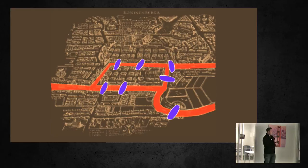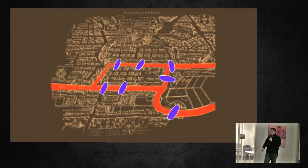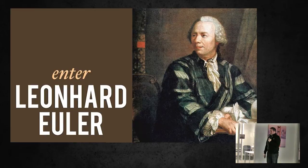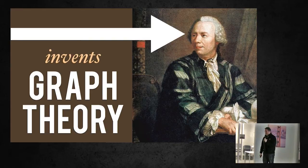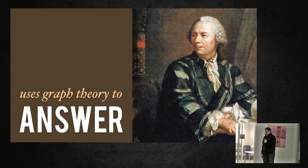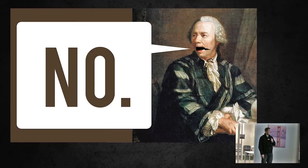The idea is, if you started on this landmass and you cross that bridge, can you cross that bridge and then cross that bridge and so on? Now you're stuck. Maybe you can start on this landmass and cross a different way — now you're stuck here too. Nobody could figure it out until this guy, Leonard Euler, pops in. This guy goes off and invents an entire sub-genre of discrete mathematics called graph theory, takes his newfound theory to this riddle, and he answers it. And the answer was no.